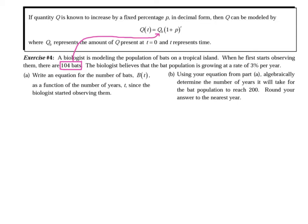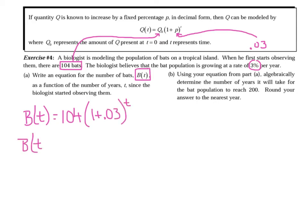We've got a biologist who is modeling the population of bats on a tropical island. When he first starts observing, there are 104 bats. That number is going to be my original amount, which is going to go in for Q sub zero. The biologist believes that the bat population is growing at a rate of 3%. I'm going to move the decimal two times to the left and substitute 0.03 in for my p. So b of t is 104 times 1 plus .03. We'll just say b of t is 104 times 1.03 raised to the t. Very important: do not multiply the 104 times the 1.03 because the 1.03 has a power up here.